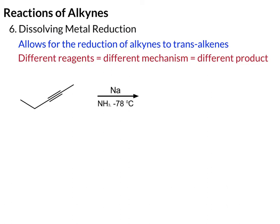This reaction uses sodium metal, liquid ammonia, and a low temperature of minus 78 degrees Celsius. The reason we use this low temperature is it's really easy to achieve in the lab by mixing dry ice and acetone — that's the low temperature that solution results in. At that low temperature, ammonia is in the liquid form. So what this will do is reduce this alkyne to an alkene, but in this case the trans-alkene.